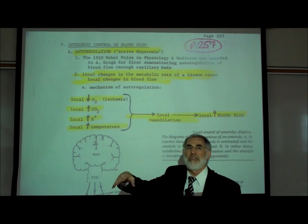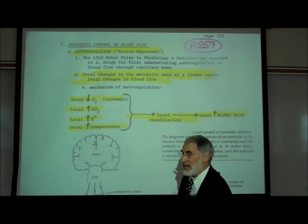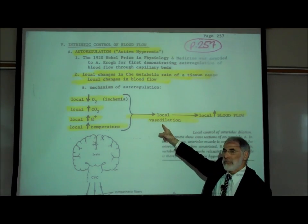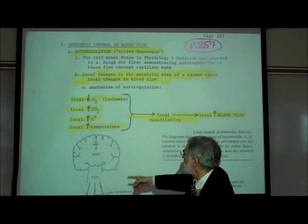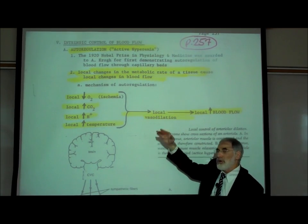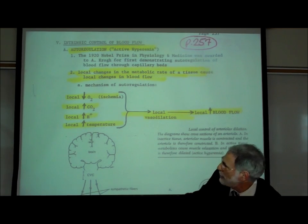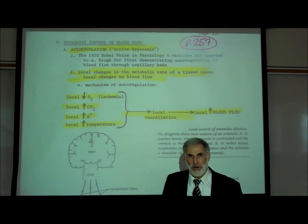If any one of these four things happens, and they commonly all occur at the same time, that causes the blood vessels in that tissue to dilate. There is localized vasodilation and the result is an increased flow of blood to that tissue where these local effects are occurring.